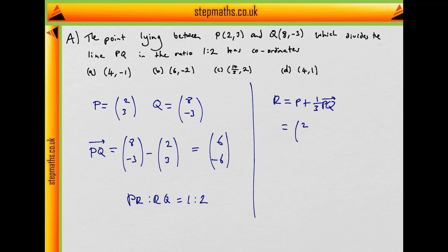Well, that's equal to P, which is (2, 3), plus 1/3 of (6, -6). Well, that's equal to 2, and then 1/3 of 6 is 2, and then 3, 1/3 of -6 is -2. So that means that our point R has the coordinate (4, 1).